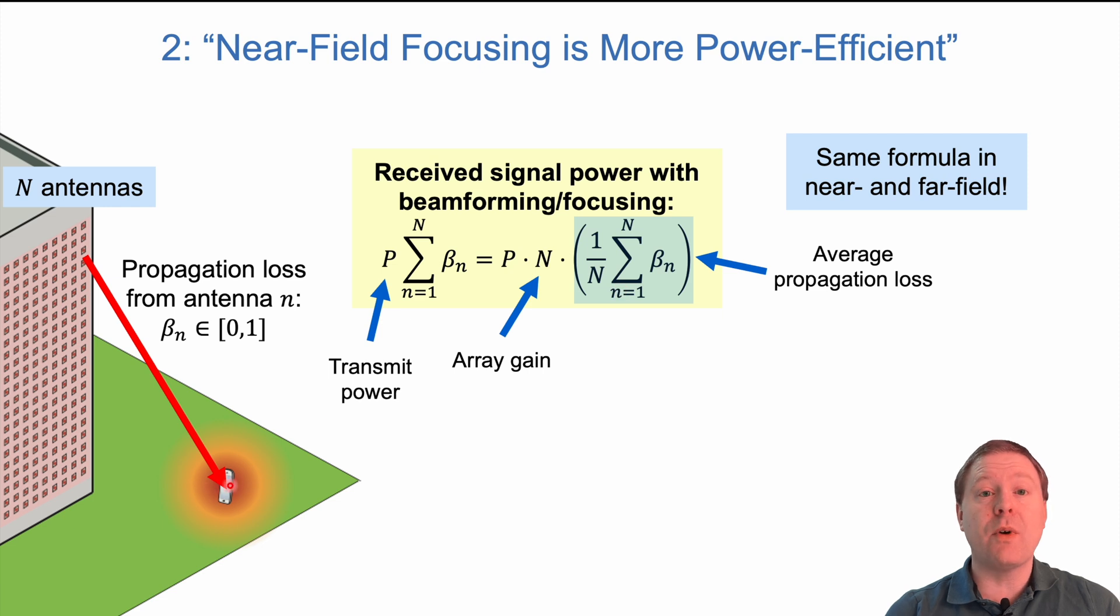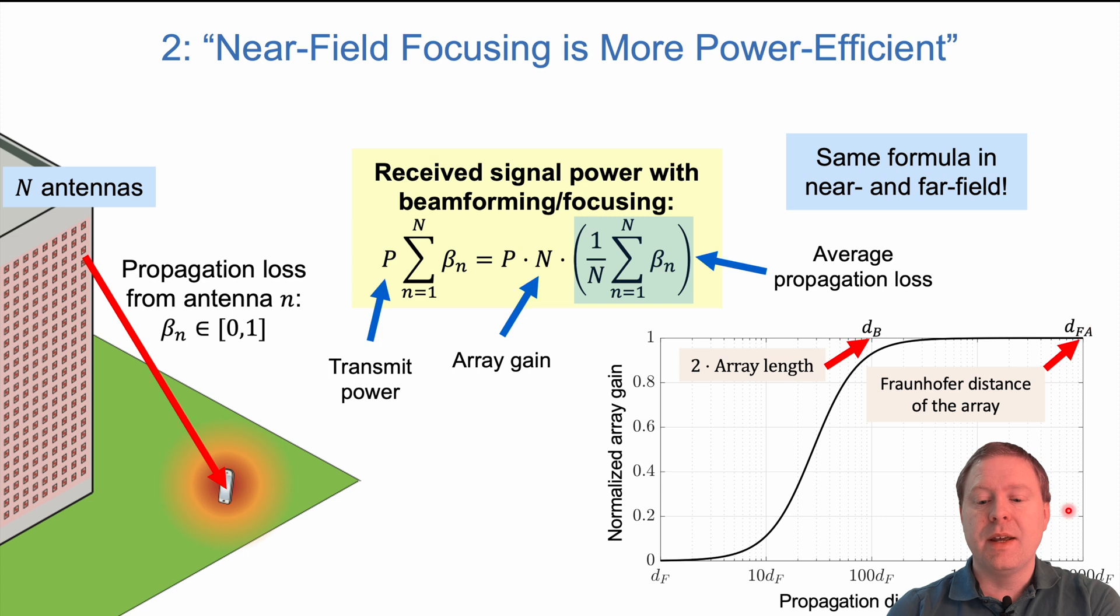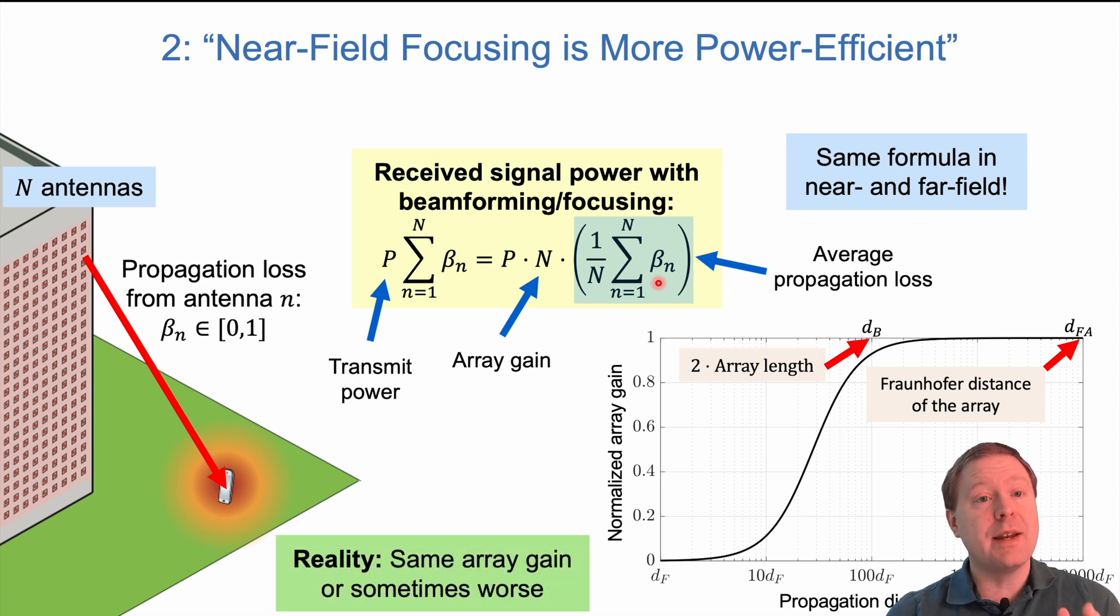So that means that at the center of our beamfocusing or beamforming, we always get an array gain proportional to n. Well, actually not always, because if we are really close and the propagation distance is shorter than two times the array length, you have substantial propagation distance variations over your array so that some of the beta values are substantially smaller than the propagation loss to the antennas in the middle. But in reality, we have the same array gain in the near field and far field, and if something is different, the near field is actually worse.